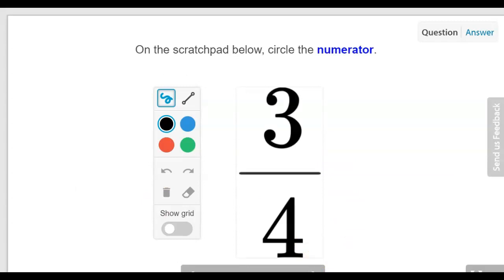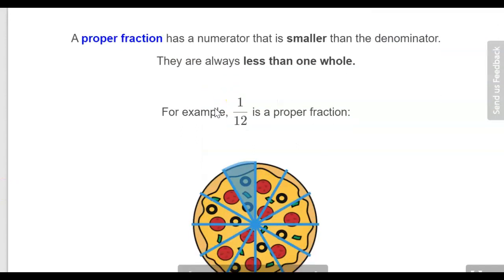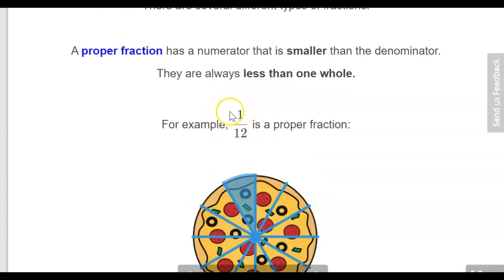There's a few practice questions that you'll have a go at later in the lesson. Now we have three different types of fractions. A proper fraction is where the numerator is smaller than the denominator, so 1 over 12 is an example of a proper fraction, and a proper fraction the value is always less than 1.